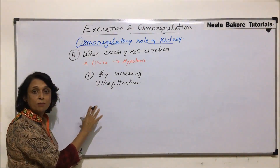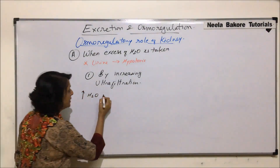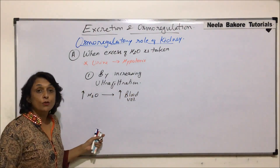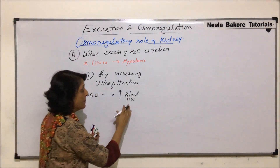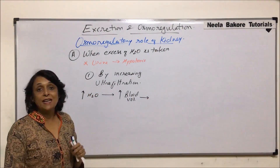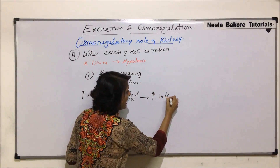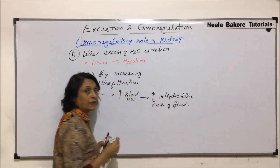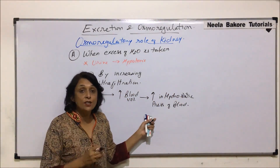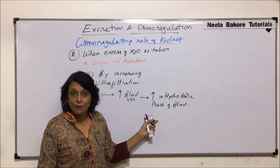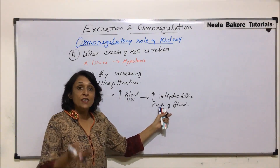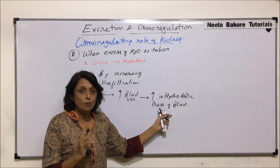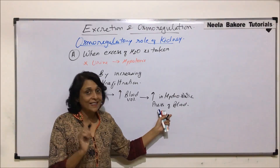If water intake is more, we can make a simple flow chart: more water taken in results in an increase in blood volume, because that extra water enters the blood. Because of this, the hydrostatic pressure of blood increases. The hydrostatic pressure with which blood enters the afferent arteriole was 60 mmHg, and the resistance pressure was 50 mmHg, so subtracting 50 from 60 gives us 10 mmHg — the normal filtration pressure.